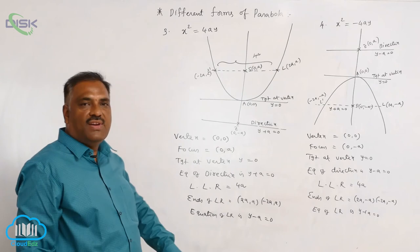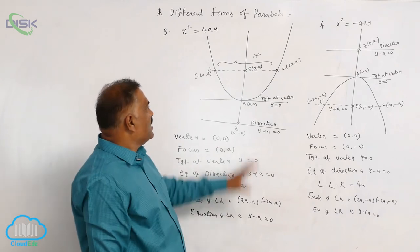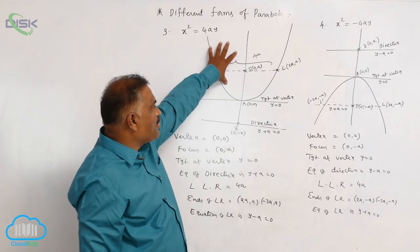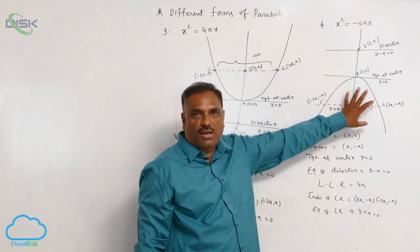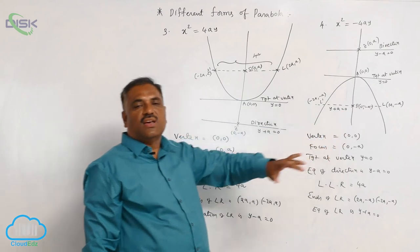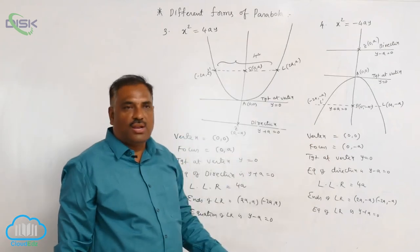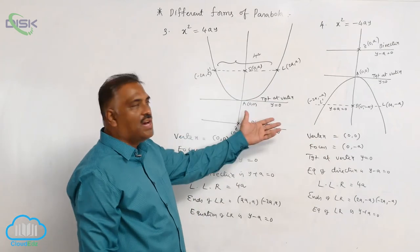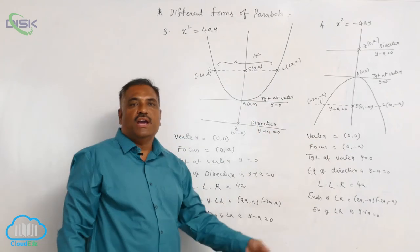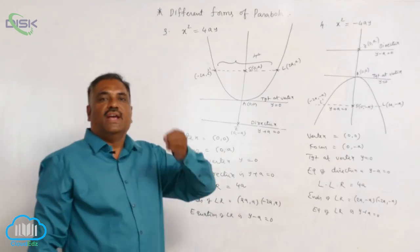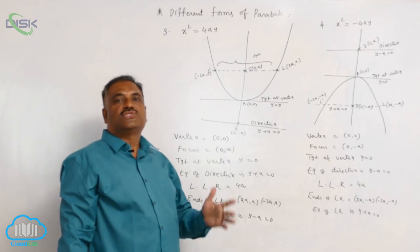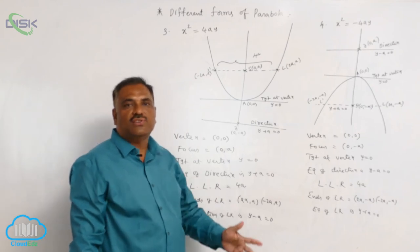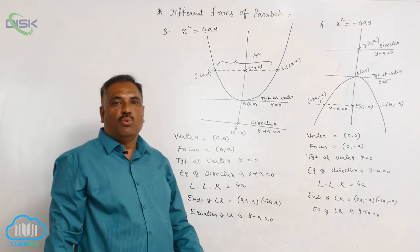To summarize: x² = 4ay is the upward parabola and x² = -4ay is the downward parabola. These are all parabolas obtained by rotation of a suitable angle of the standard equation y² = 4a.